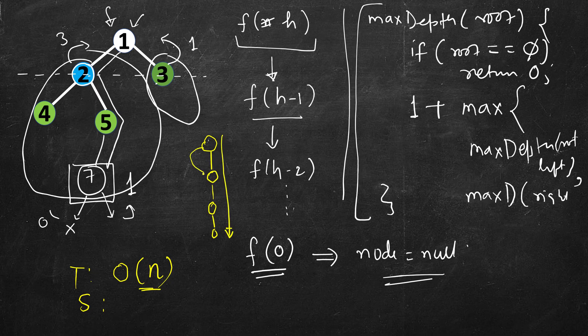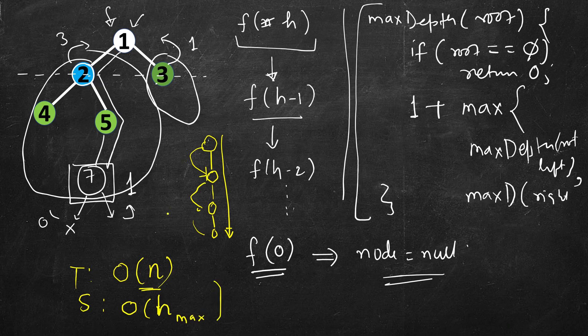This node will call the next, which will call the next, and so on. So space can be of the order of O(n), or you can generally call it O(H) where H is the maximum height.